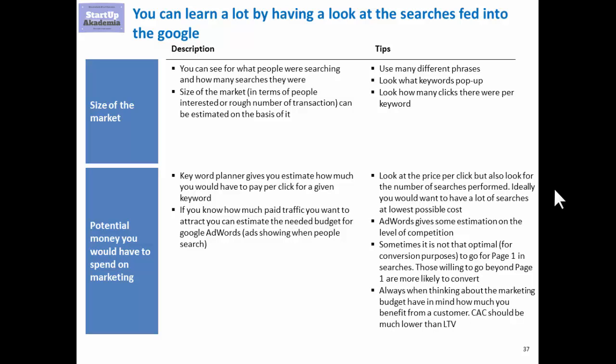The other thing which is also very important is that it enables you to define how much you would have to spend to get into the market. So apart from the number of searchers, Keyword Planner gives you an estimated cost per click, which you would have to pay to get on the first page of Google search. In this manner, you are able to know how much you would have to pay to get paid traffic, which in the beginning is probably one of the very important sources of your future potential customers.